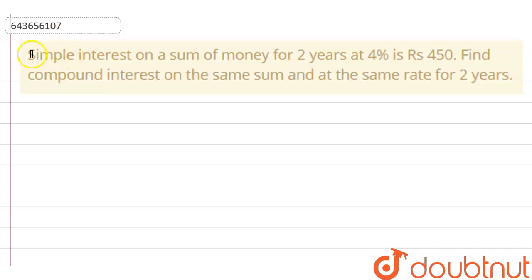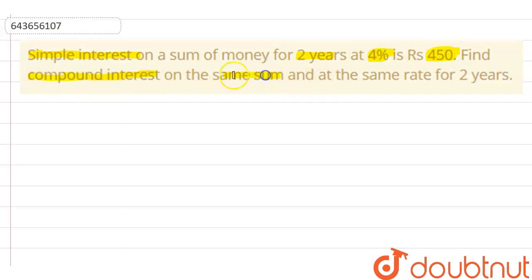The question is: simple interest on a sum of money for two years at four percent is rupees 450. Find the compound interest on the same sum and at the same rate for two years.